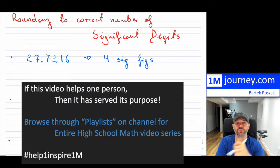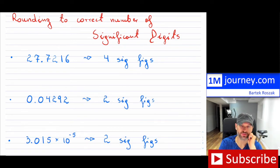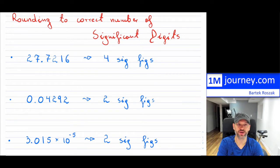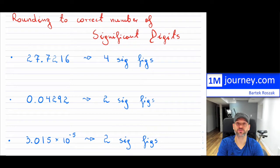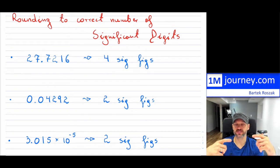Rounding to the correct number of significant figures or significant digits — sometimes when working out word problems, teachers may ask you to round your answers to two decimal places, or to the tenth, or to the hundredth. But in some problems it may not be known how many decimal places there will be, and a teacher may ask you to round your answer to four significant figures or two significant figures, requiring you to truncate or round correctly.